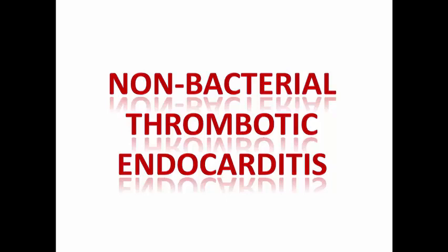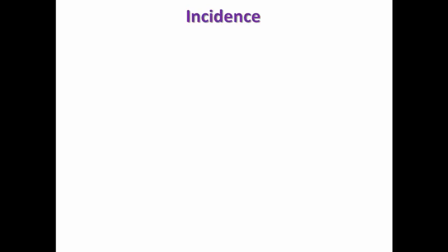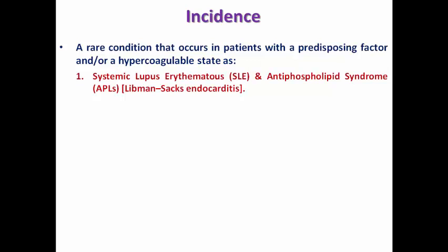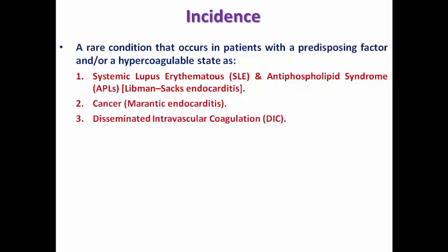Now let's discuss non-bacterial thrombotic endocarditis. As the name implies, it is a non-infectious pathology — a rare condition occurring in patients with predisposing factors or a hypercoagulable state. Examples include systemic lupus or antiphospholipid syndrome, commonly called Libman-Sacks endocarditis; cancer, called marantic endocarditis; and patients with DIC, tuberculosis, or autoimmune diseases, all liable to this non-infectious inflammation caused by hypercoagulability.